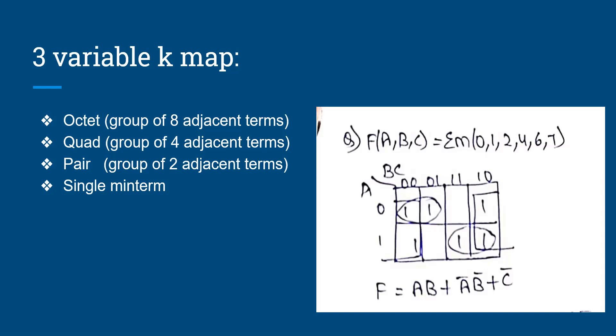So it is a SOP representation. If we place ones on 0, 1, 2, 4, 6, 7 in the equivalent rectangular boxes.